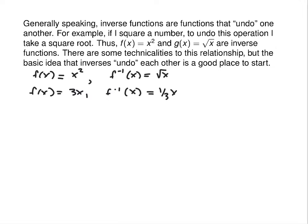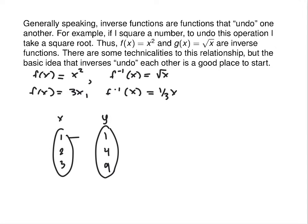When I first give this example in an Algebra 1 or Algebra 2 class, I begin with a potato picture and I say here are my x's: they're 1, 2, and 3. And they go to my y's that are 1, 4, and 9. So 1 goes to 1, 2 goes to 4, 3 goes to 9. That is the function f.